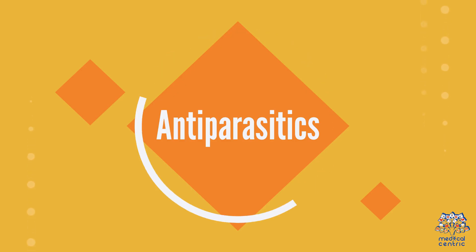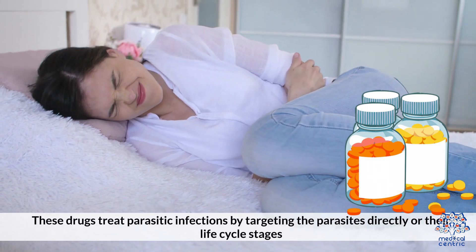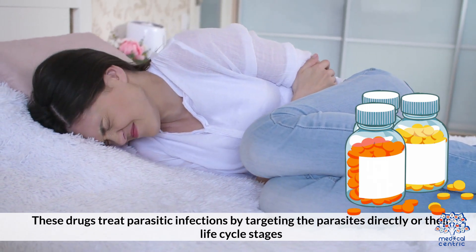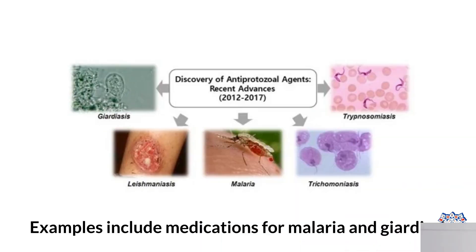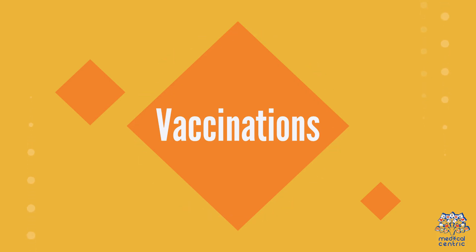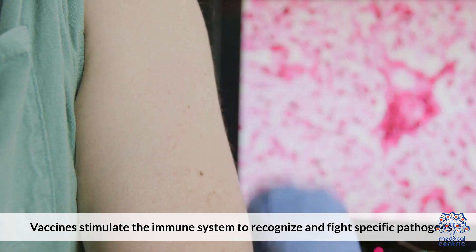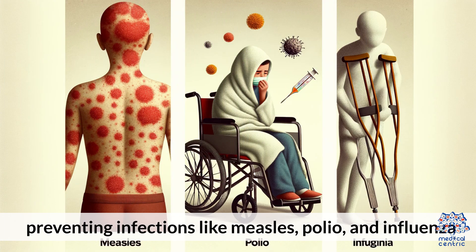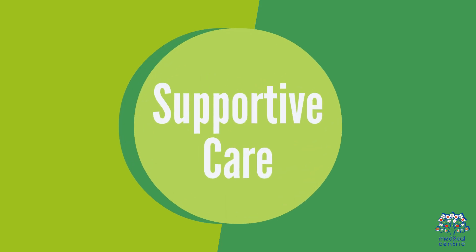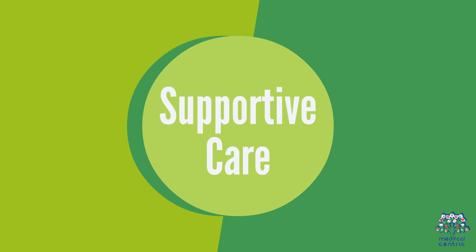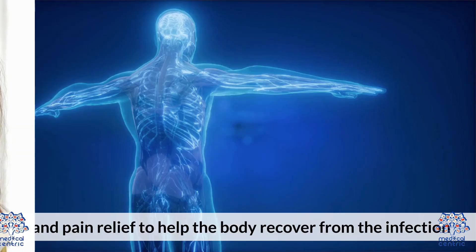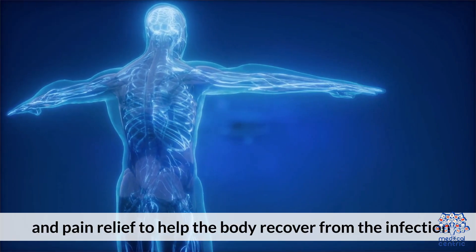4. Antiparasitics: These drugs treat parasitic infections by targeting the parasites directly or their life cycle stages. Examples include medications for malaria and giardiasis. 5. Vaccinations: Vaccines stimulate the immune system to recognize and fight specific pathogens, preventing infections like measles, polio, and influenza. 6. Supportive Care: Includes rest, hydration, and pain relief to help the body recover from the infection.